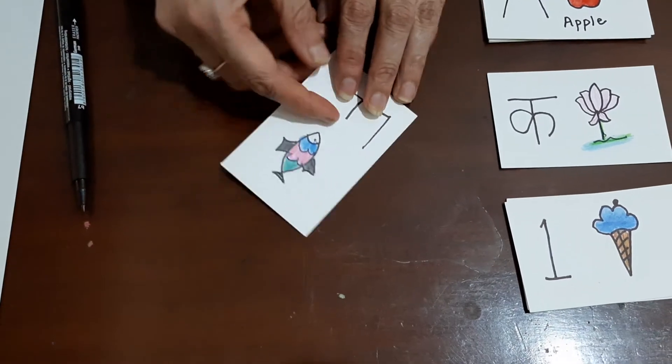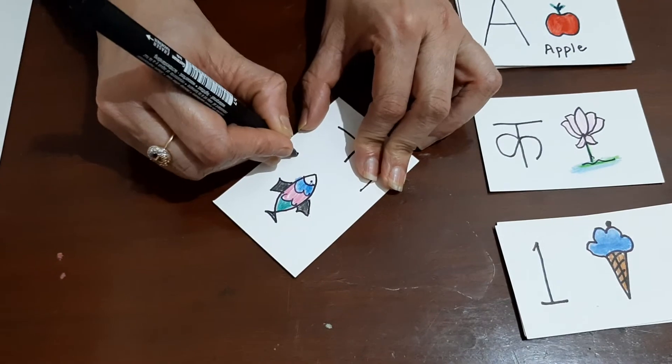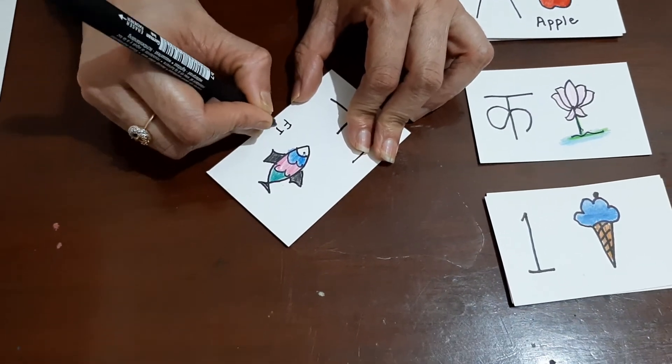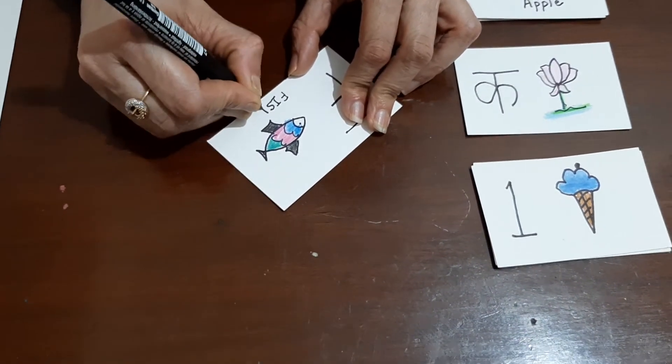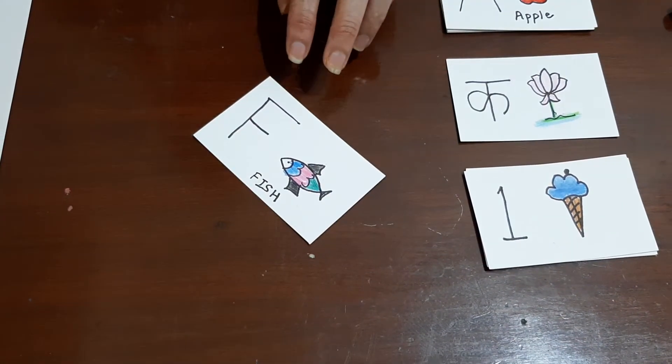You can also write the name of the object or the animal, whatever you are drawing. So this also goes into a child's memory. Write it like this: Fish. Now our flashcard is ready.